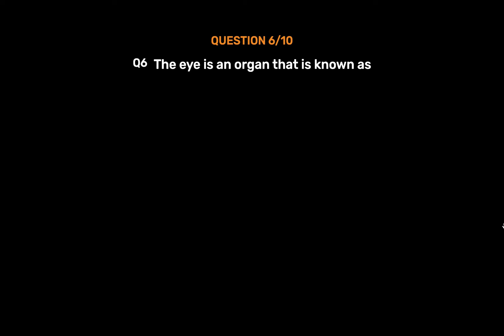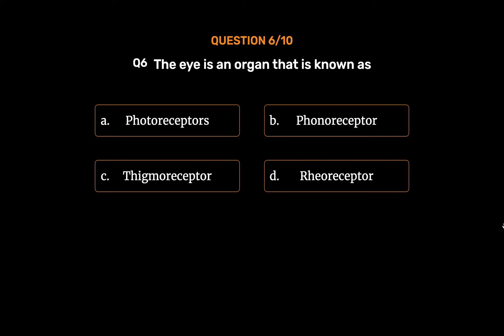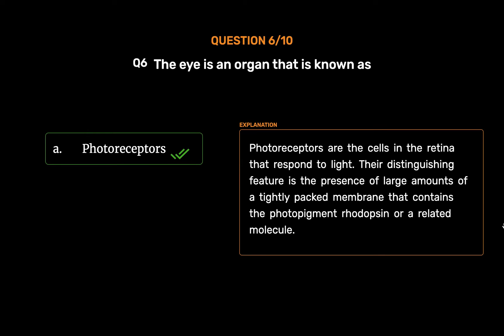Question No. 6. The eye is an organ that is known as — Option A: Photoreceptors. Option B: Phenoreceptor. Option C: Tigmoreceptor. Option D: Reoreceptor. The correct answer is Option A: Photoreceptors. Photoreceptors are the cells in the retina that respond to light. Their distinguishing feature is the presence of large amounts of a tightly packed membrane that contains the photopigment rhodopsin or a related molecule.